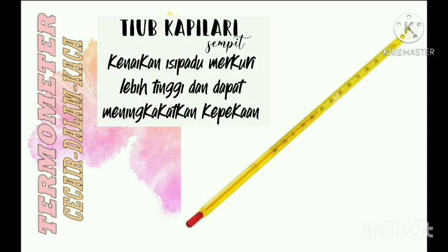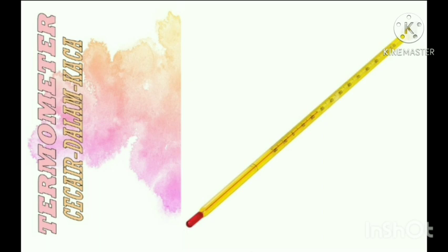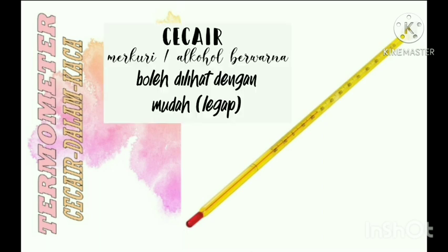Supaya kenaikan isipadu mercury lebih tinggi dan dapat meningkatkan kepekaan. Antara cecair yang digunakan dalam termometer ialah mercury dan alkohol berwarna. Cecair ini digunakan kerana boleh dilihat dengan mudah atau legap.